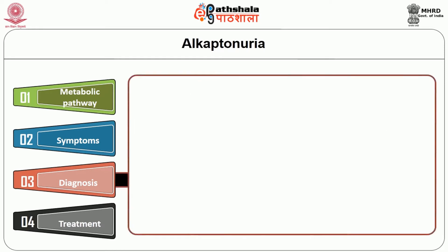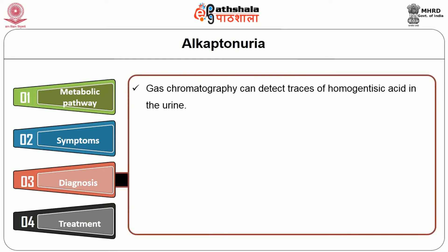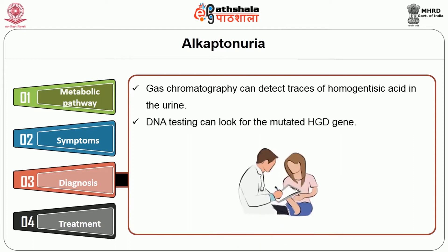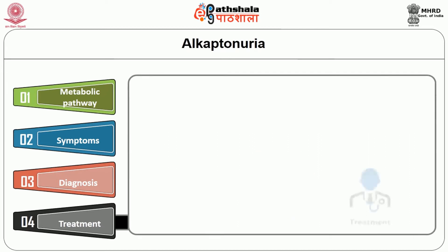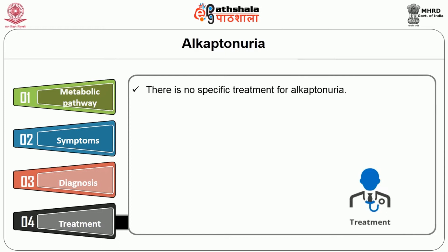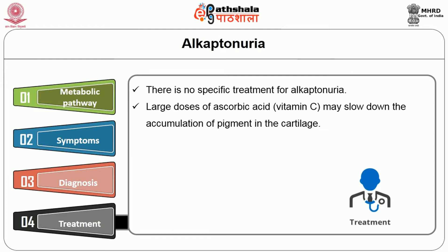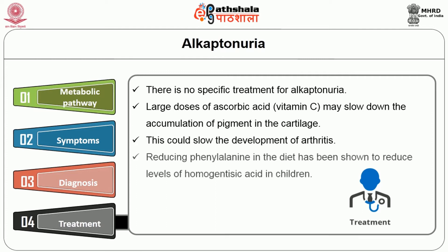Diagnosis involves gas chromatography to detect traces of homogentisic acid in the urine, and DNA testing to look for the mutated HGD gene. There is no specific treatment for alcaptonuria. Large doses of ascorbic acid (vitamin C) may slow down the accumulation of pigment in the cartilage, slowing the development of arthritis. Reducing phenylalanine in the diet has been shown to reduce levels of homogentisic acid in children.